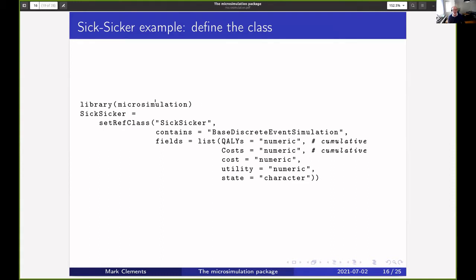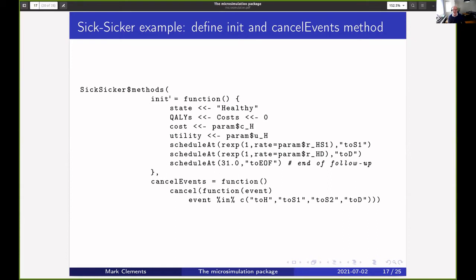Then what we do is we're calling the microsim package, defining the class, inheriting from the base discrete event simulation, and then we define these fields for the cumulative QALYs for each individual, cumulative costs for each individual, the current cost, current utility, and current state. Then the init method says that everyone starts being healthy with zero cumulative costs, with the current cost being that for being in the healthy state and the current utility for being in the healthy state. Then we've got transitions from going to sick or to sicker or to death or to the end of follow-up.